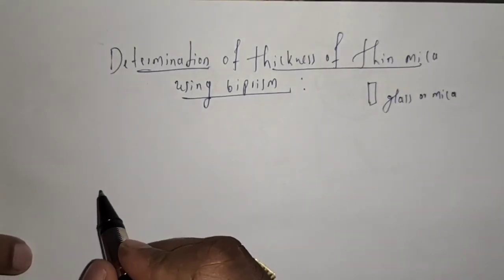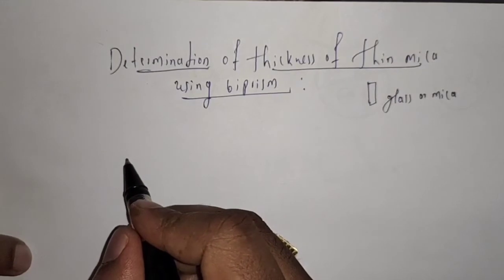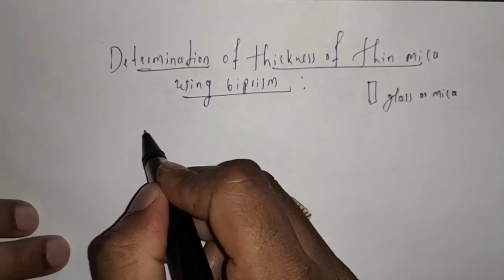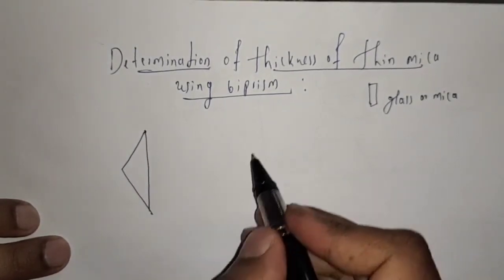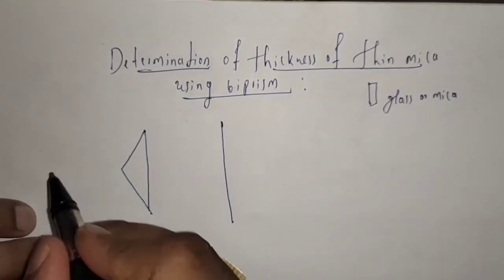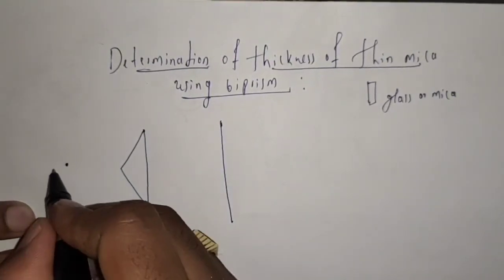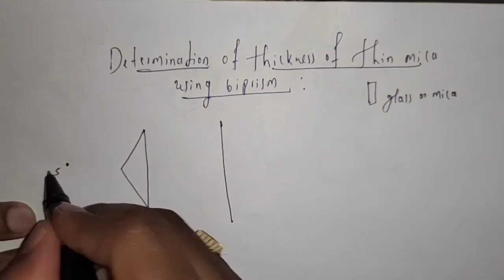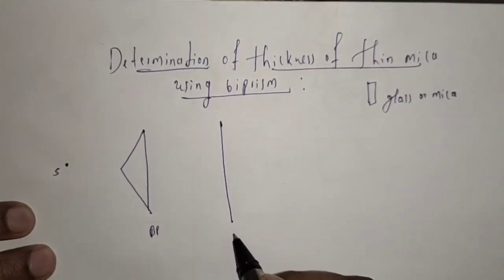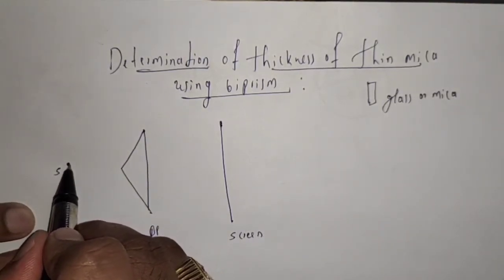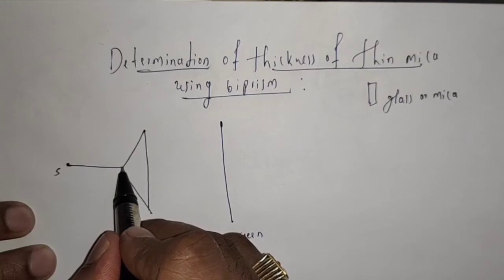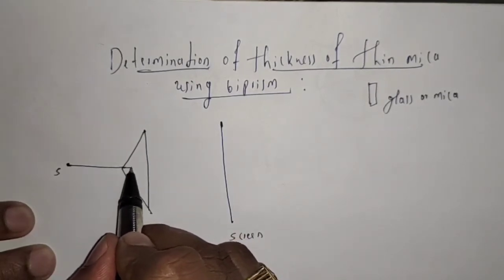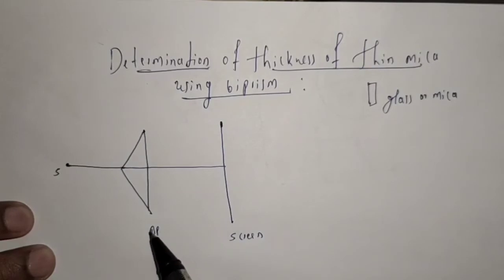Let us recall the Fresnel biprism experiment which we studied in an earlier class. Here I am going to take a biprism and a screen. I am going to consider a source — this is the source, this is the biprism, and this is the screen. We know that from the source, light waves are going to be incident on the Fresnel biprism, and at the center the light waves do not refract; they hit directly on the screen.